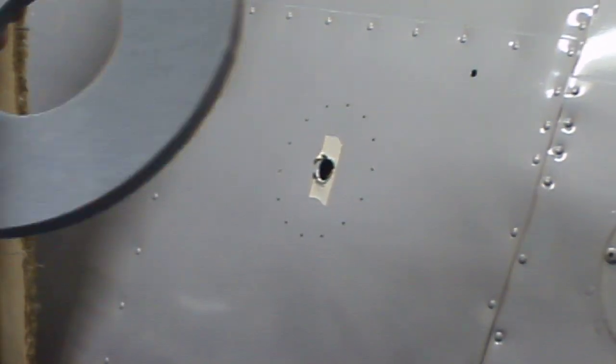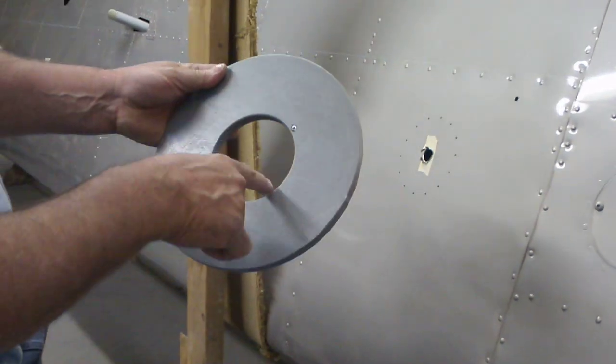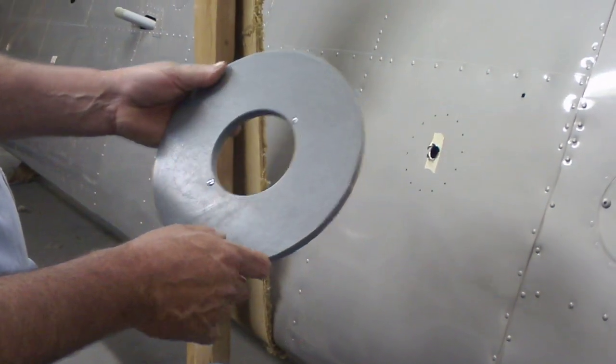Now we have our 4-inch plate. The router bit we're going to use is a quarter inch, so you don't have to do any math on it. It's going to be a 4-inch hole on the inside.